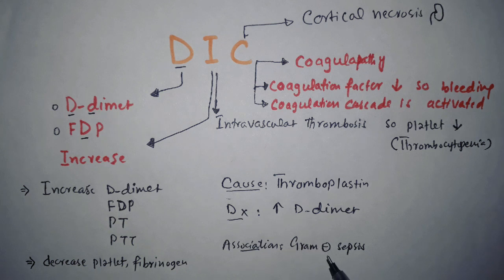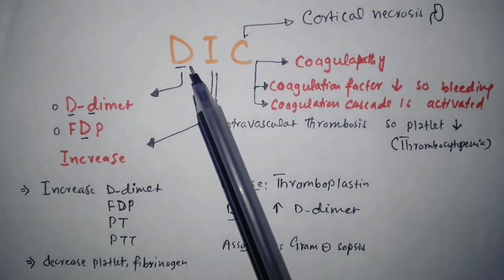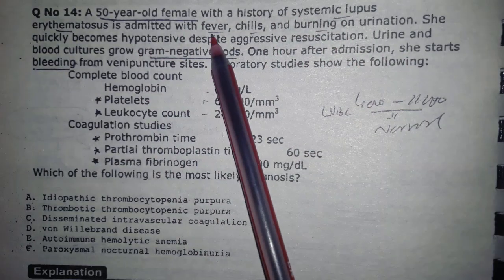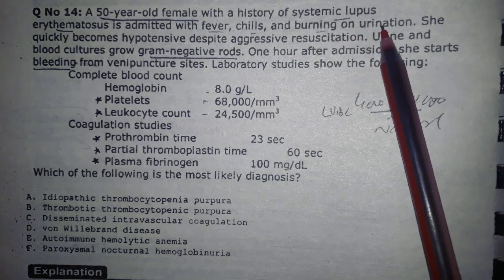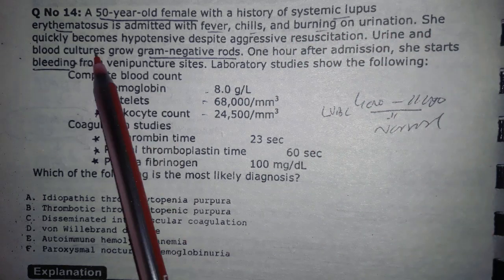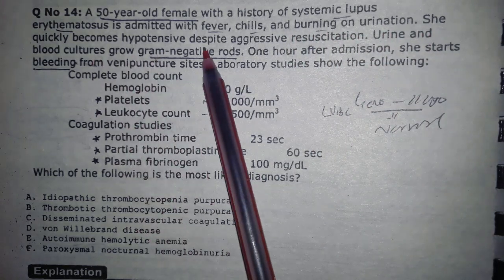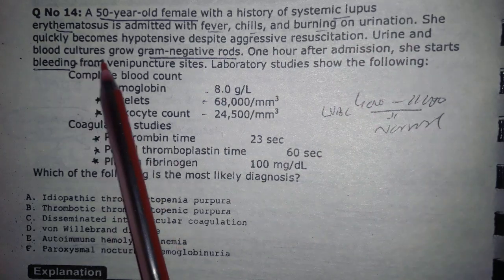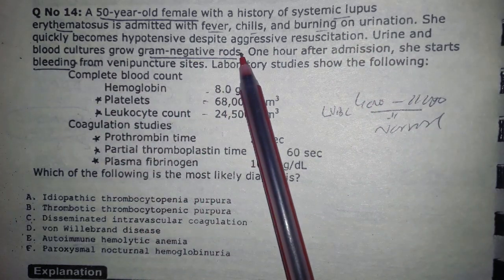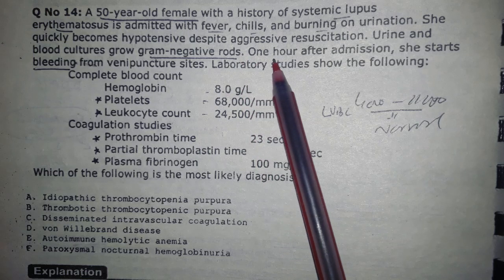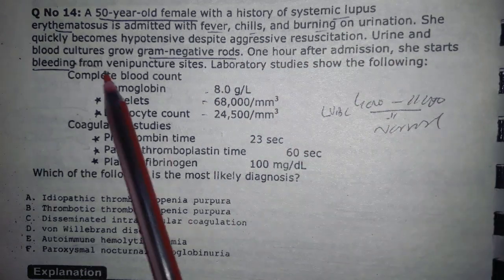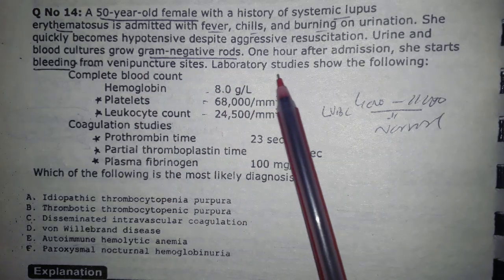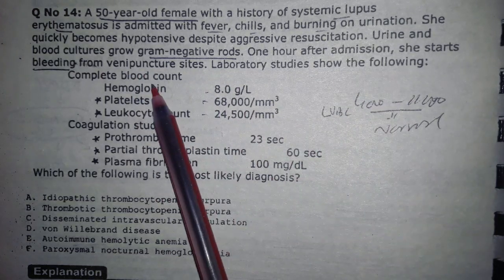A 50-year-old female with a history of SLE is admitted with fever, chills, and burning urination — consistent with a UTI. She quickly becomes hypotensive despite aggressive resuscitation. Urine and blood cultures grow gram-negative rods, confirming sepsis. One hour after admission, she starts bleeding from venipuncture sites.